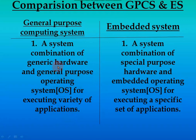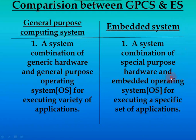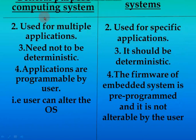In GPCS, general hardware and a general OS are used for executing a variety of applications. But in an embedded system, special purpose hardware — hardware specially designed for a particular purpose — is used, along with an embedded operating system for executing a specific set of applications. In GPCS, a lot of things are done with lots of applications; in embedded systems, only a specific set of applications is used.